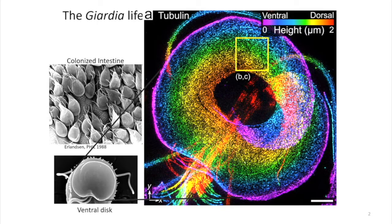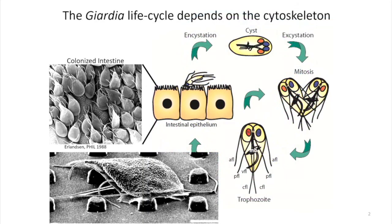The ventral disc is a microtubule-based organelle. I'm showing you some expansion microscopy from Josh Vons' group in chemistry. The color-coding gives the impression of a dome-shaped structure where these microtubules are 40 nanometers apart. Most attention has been given to this structure as mediating attachment. But today I'm going to tell you about another structure in Giardia — which Julie's talk kind of set up — called the ventral flange.